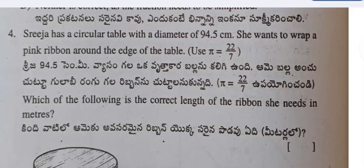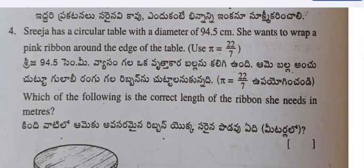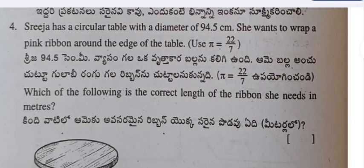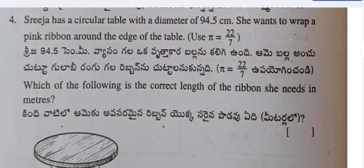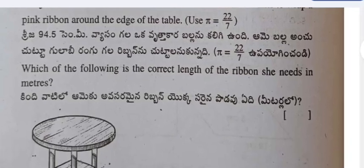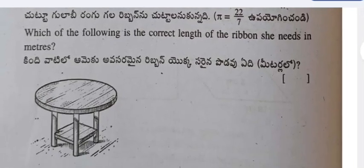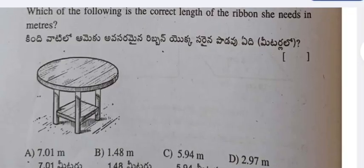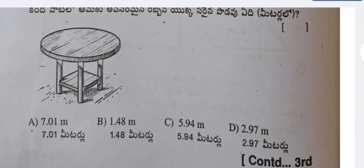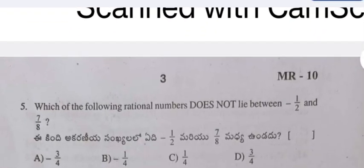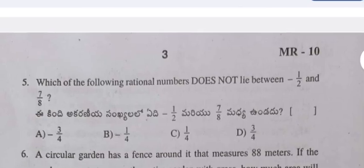Question 4: Srija has a circular table with a diameter of 94.5 centimeters. She wants to wrap a pink ribbon around the edge of the table. Which of the following is the correct length of ribbon she needs, in meters? Four options are given; the correct one can be selected.